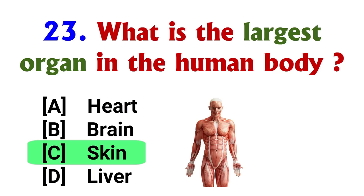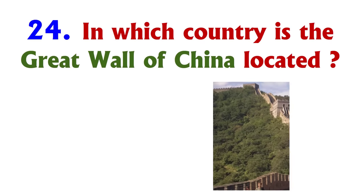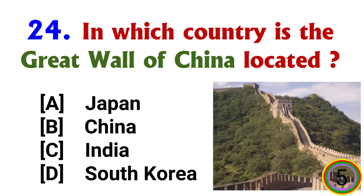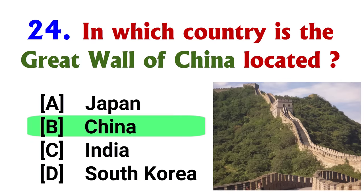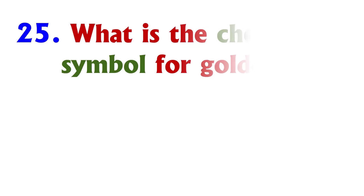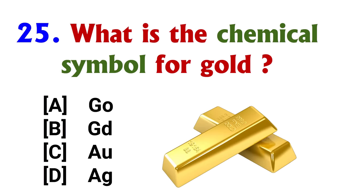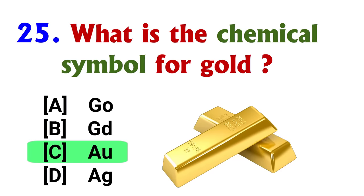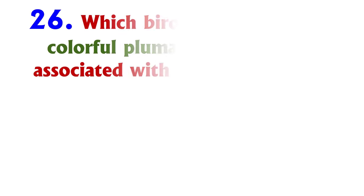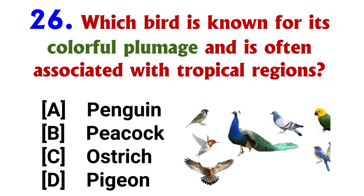Who was the first man to set foot on the moon? Answer: option B, Neil Armstrong. What is the largest organ in the human body? Answer: option C, Skin. In which country is the Great Wall of China located? Answer: option B, China.